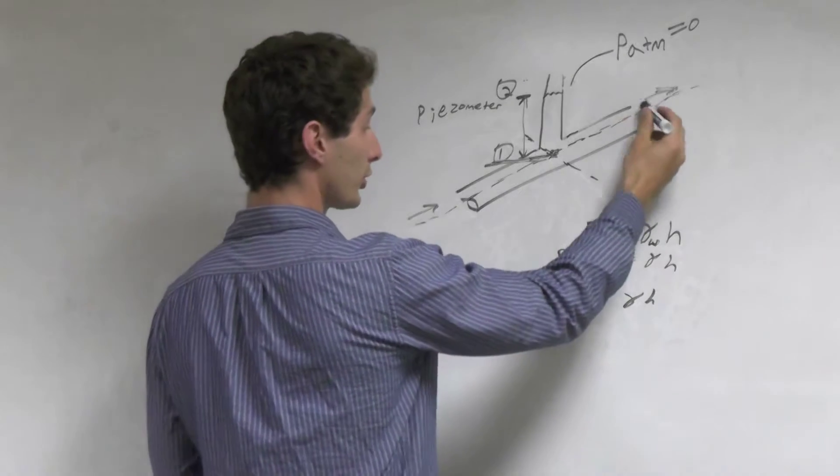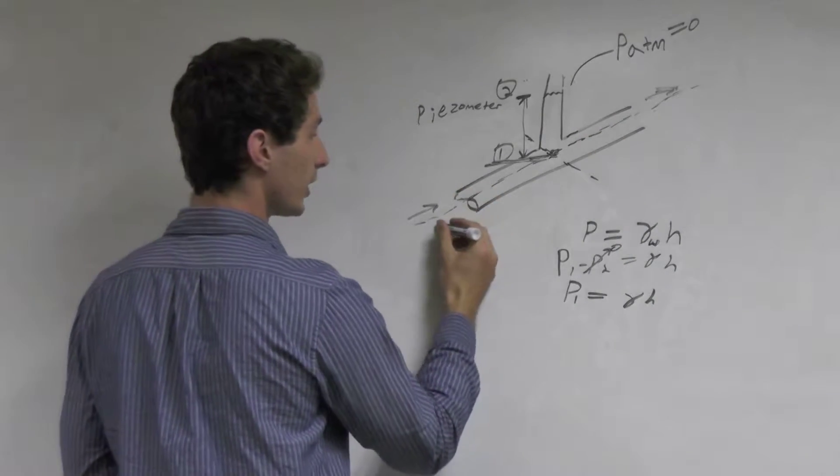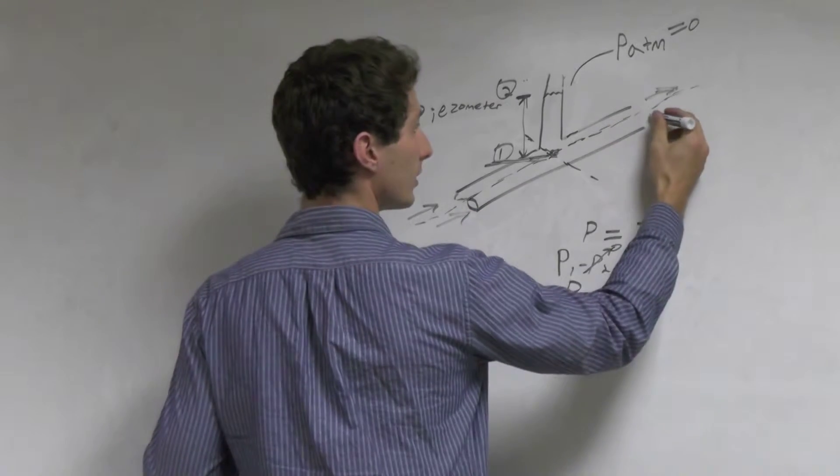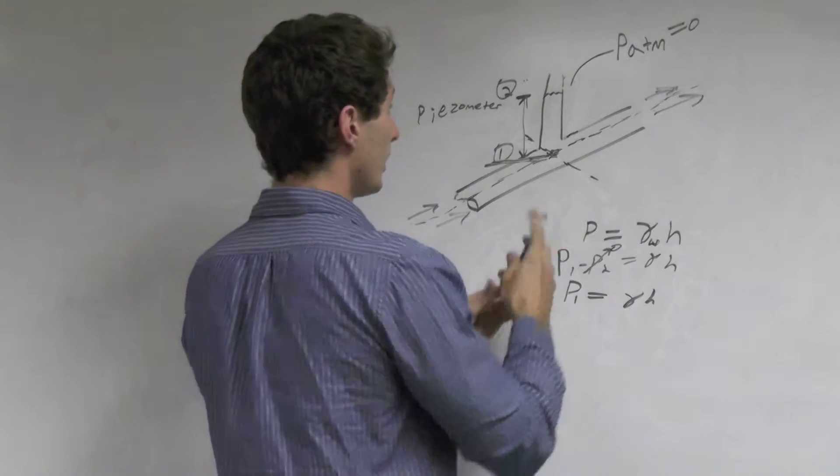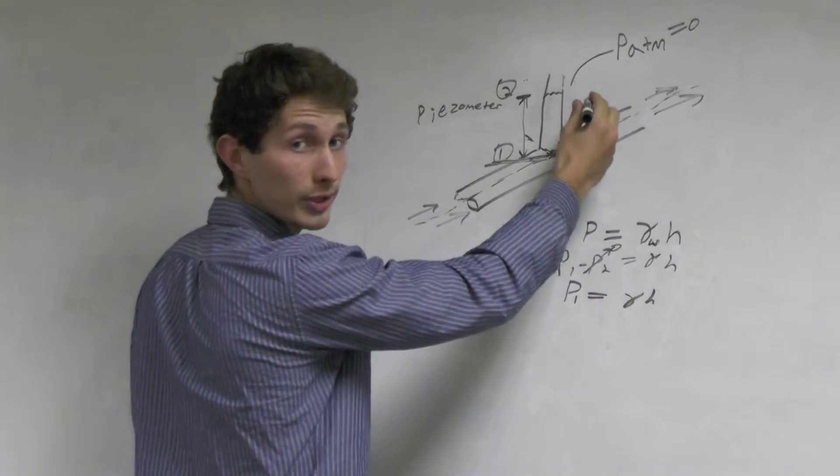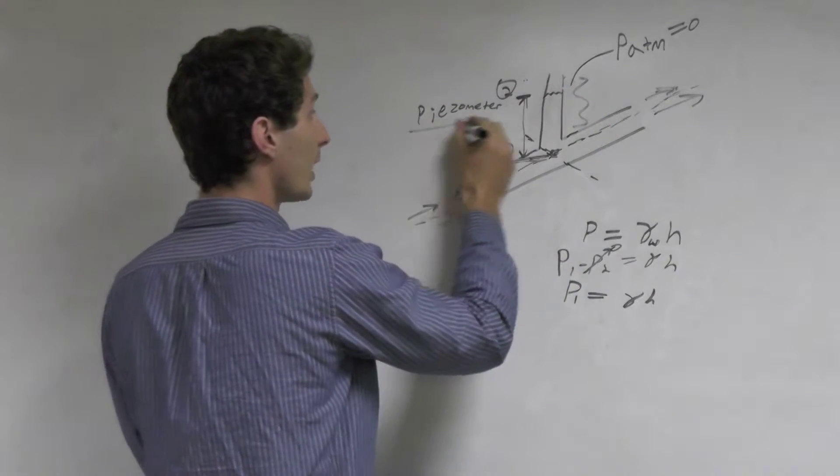This is our pipe, a circular pipe. Water is running through the pipe, inside and outside. There's a vertical pipe running upwards. This pipe right here, the vertical pipe, is a piezometer.